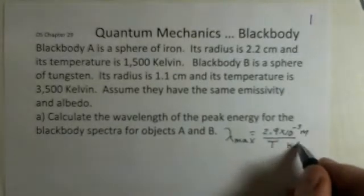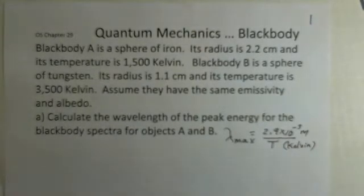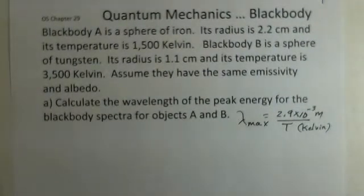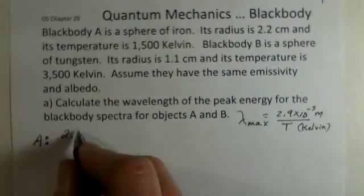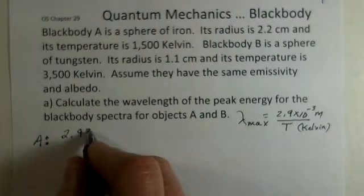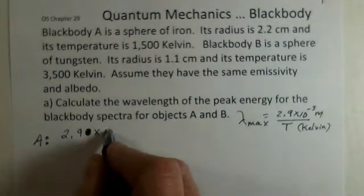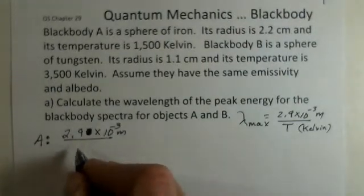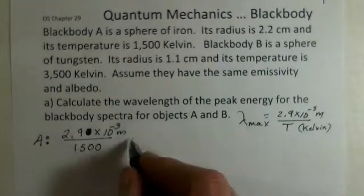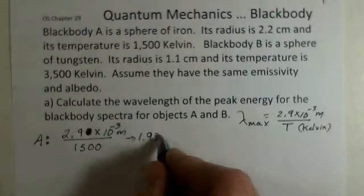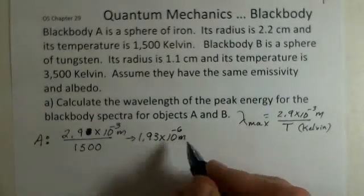Divided by the temperature, and we must use Kelvin for the temperature. 2.9 times 10^-3 meters divided by the temperature in Kelvin. So let's go ahead and do that for these two objects. First for object A, we'd have 2.9 times 10^-3, and then its temperature is 1500 Kelvin. Again, you should be doing this with your own calculator. But doing this operation, I came up with 1.93 times 10^-6 meters.